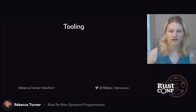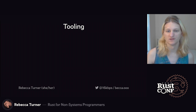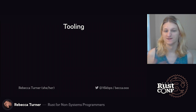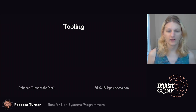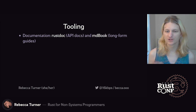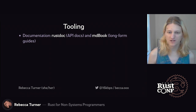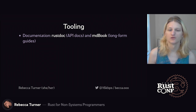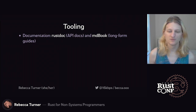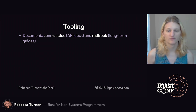Before we start looking at code, I want to point out a few of the tools that make writing Rust easy and fun. We have RustDoc, which compiles doc-comments written in Markdown to web pages, complete with search, links, and more. We also have MDBook for writing longer-form narrative-style documentation. MDBook was created to write the Rust Book, the main source of Rust documentation.